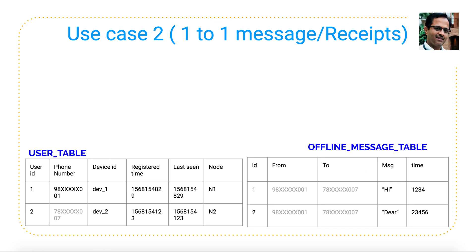Now let's talk about how one-to-one messaging works with an architectural diagram. Let's take a case where Joe has to send a message to Kim — Joe's phone number starts with 98 and Kim's with 78. For this design we need two important tables: the user table with phone number, device ID, and pre-allocated node; and an offline message table with phone number from, phone number to, message, and timestamp for sequencing.